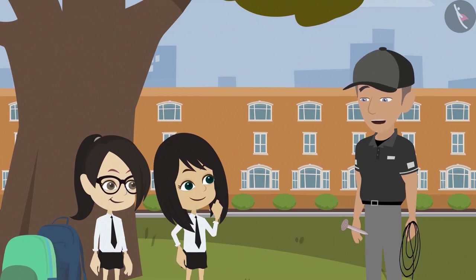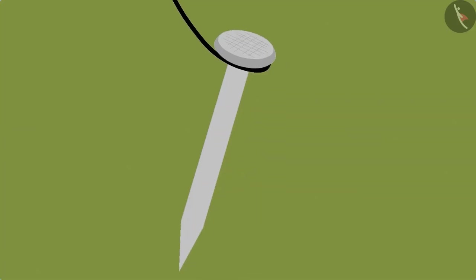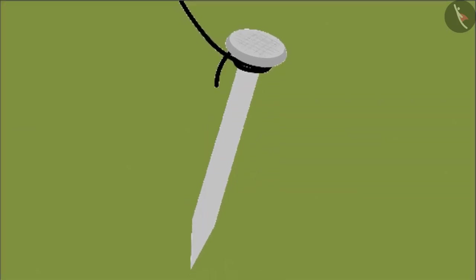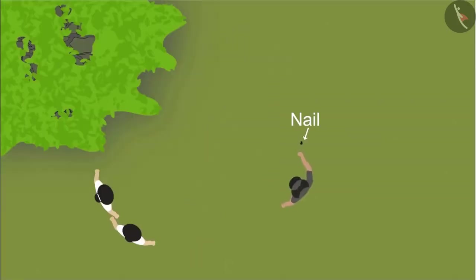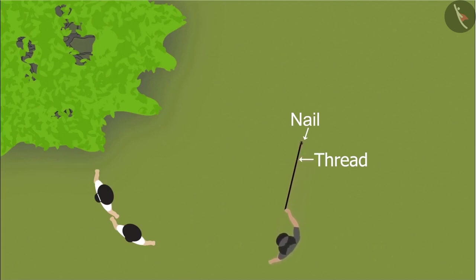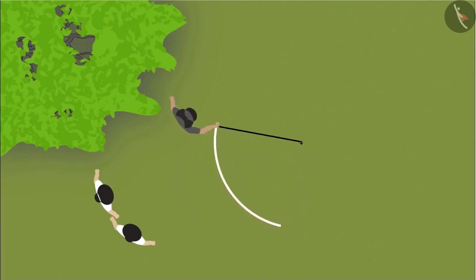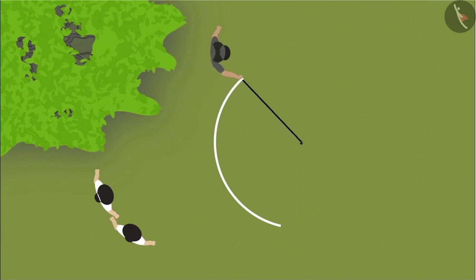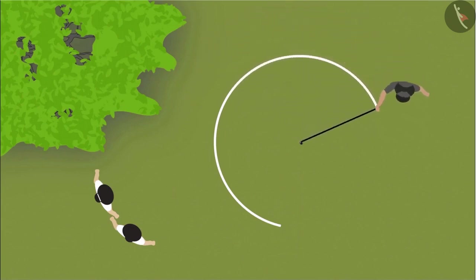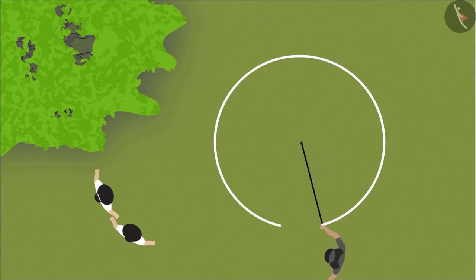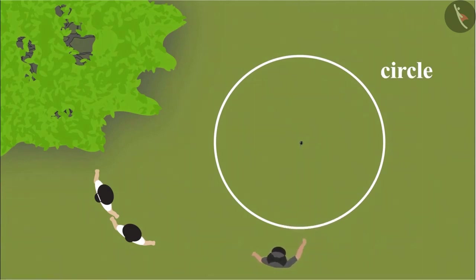For this, we will first tie the thread to the nail. Then we will hammer the nail at one place in the ground. Now we will hold the front end of the thread firmly and walk around the nail to create a circle. We can use a stick or any other sharp object to make the circle on the ground. A complete circle is made.